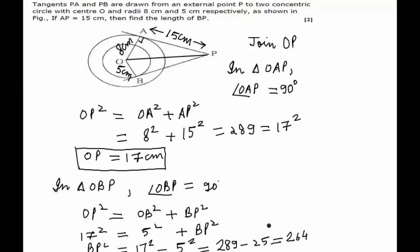Thus we can say that BP will be equal to square root of 264, which can also be factorized and written as 2 square root of 66 cm. This would be the solution to our problem.